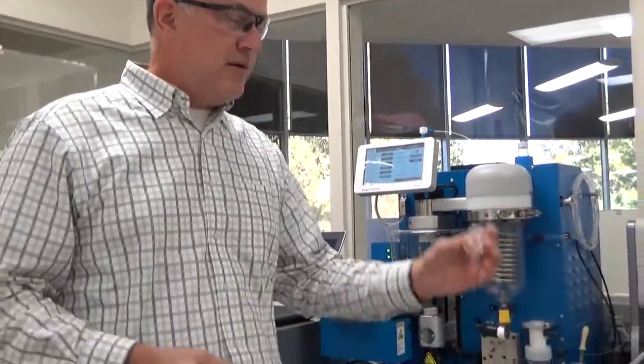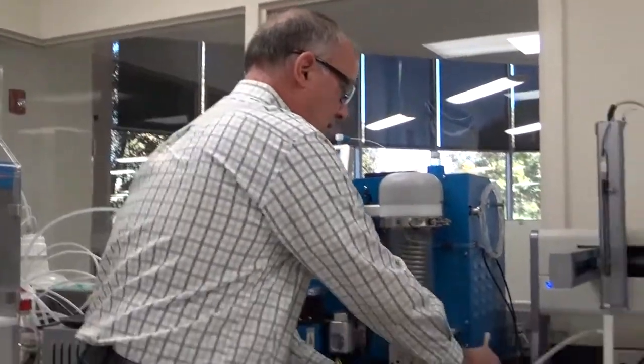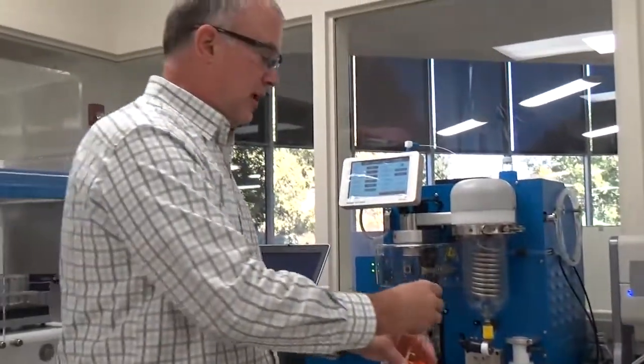So what I want to do is show all the different ways you can introduce samples into a V10 touch. The most basic way is you just take a vial, you put your reaction products in it.